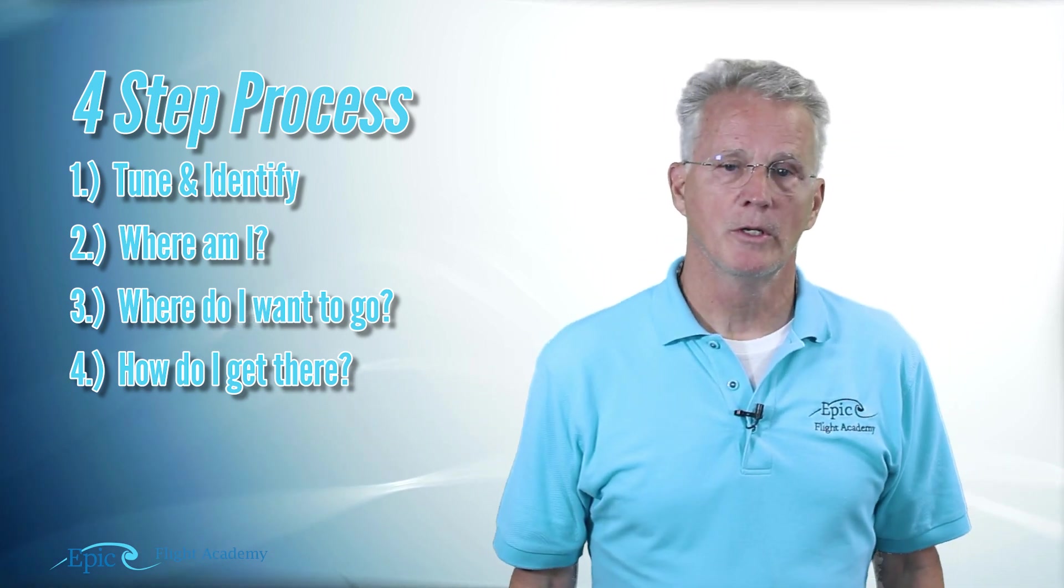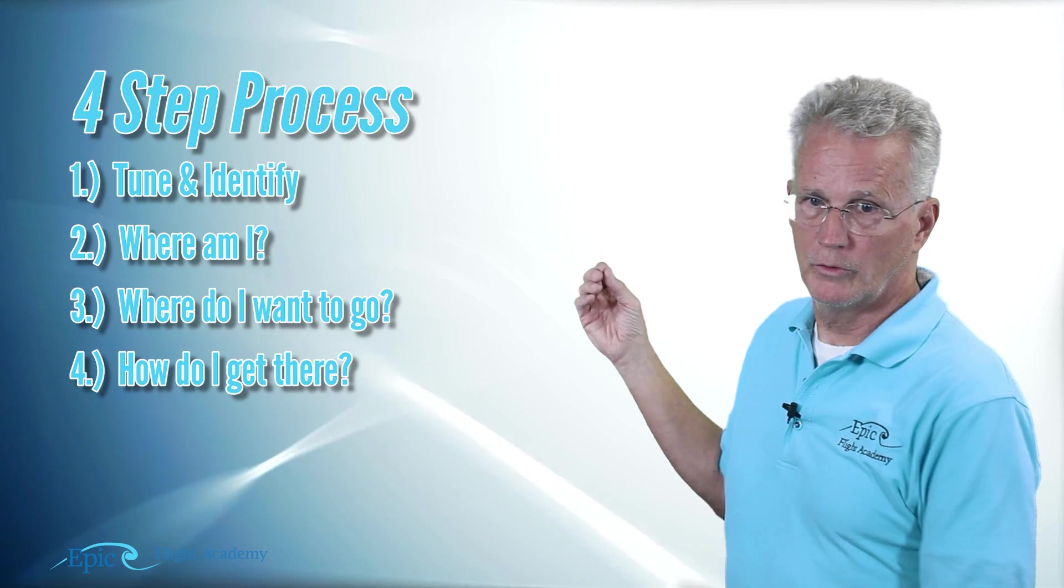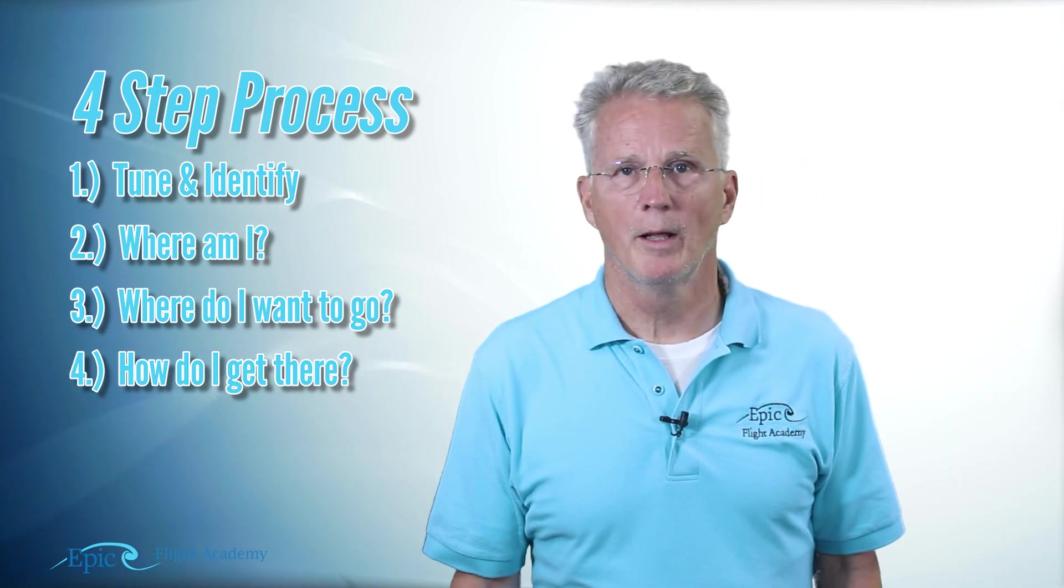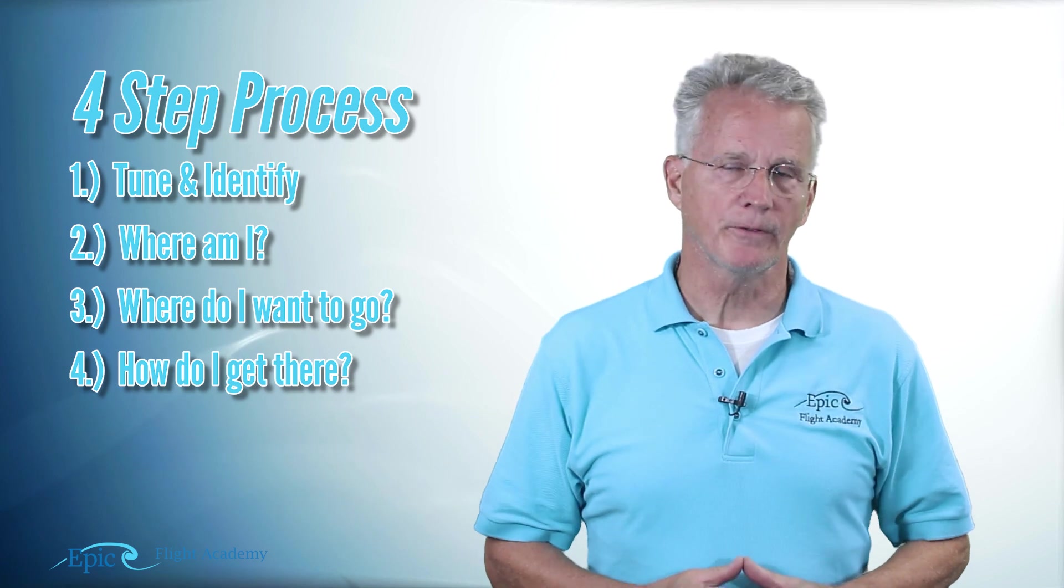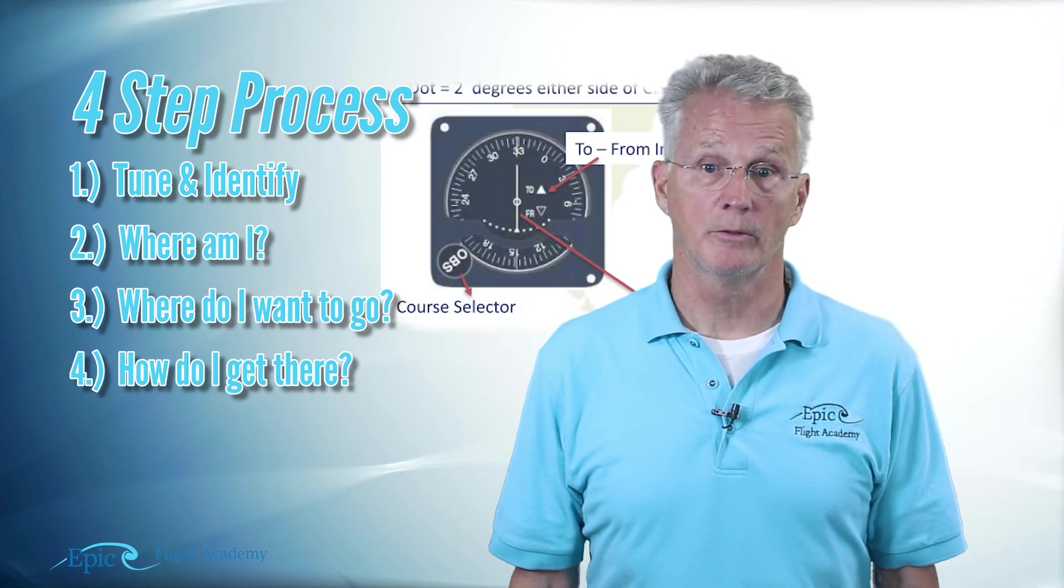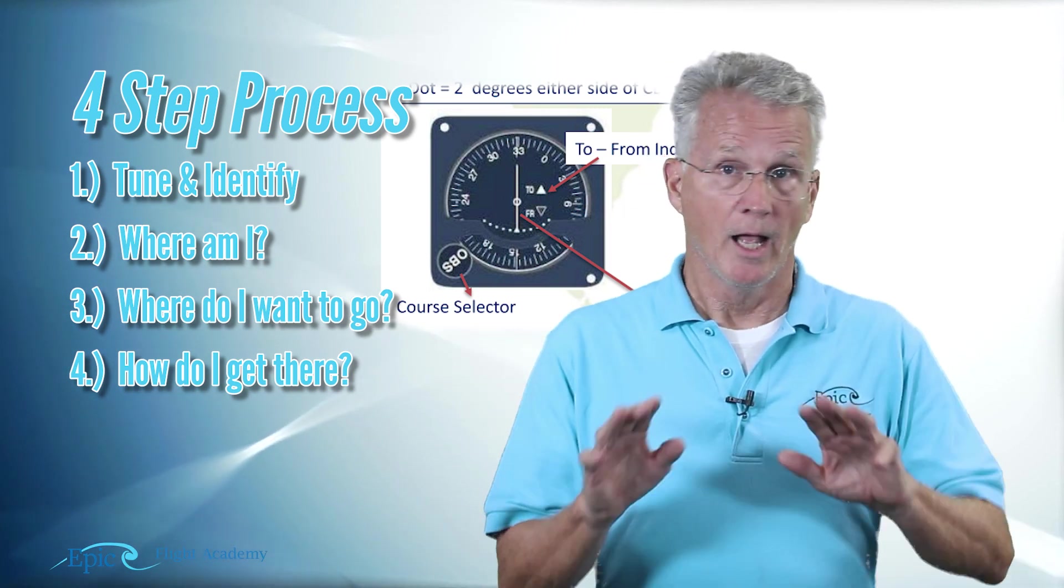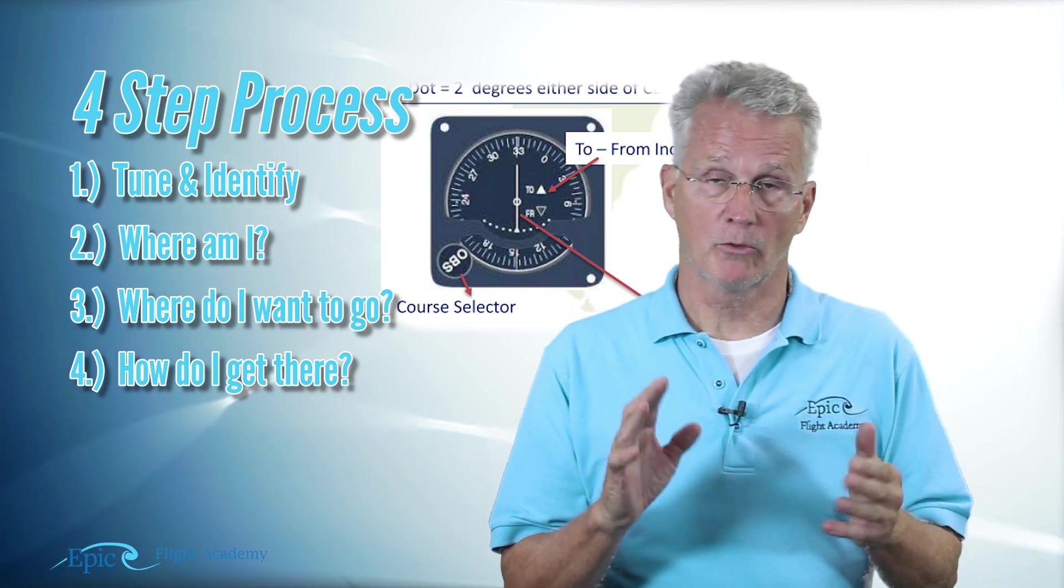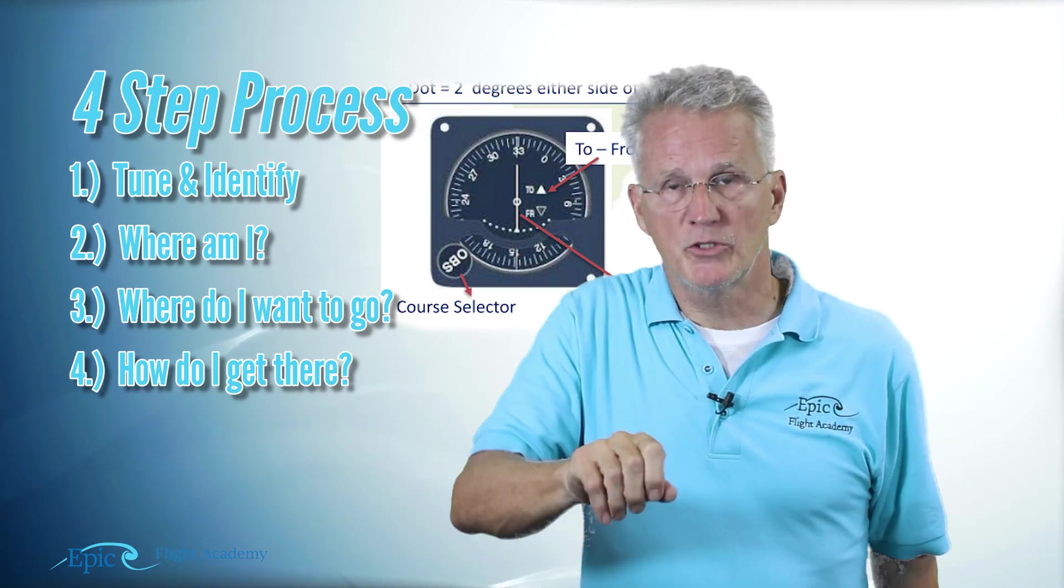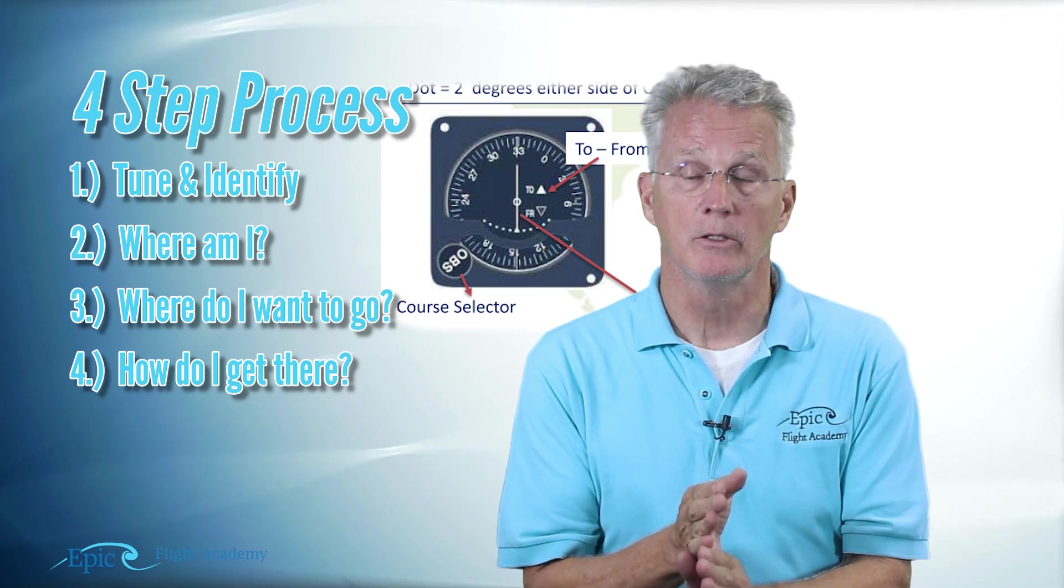That takes us to step two. In our example from the online course, tune the proper VOR frequency and identify that station. Then step two: where am I? That is not difficult to determine with the VOR. Here's what you do: turn that OBS selector until the flag flips to a FROM indication. I don't care where we want to go quite yet. Hold on, we're still just on step two. Spin it until the flag flips to FROM and continue to spin it until that CDI needle centers up.